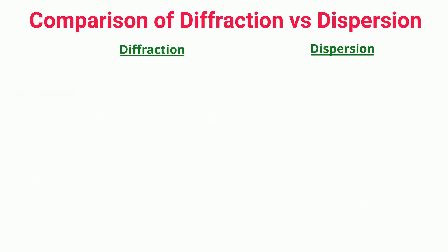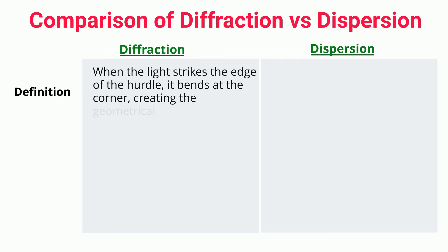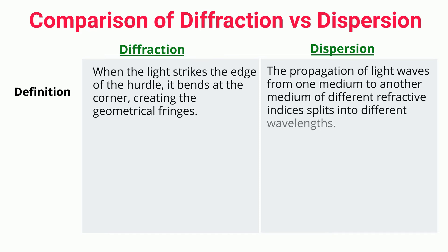Diffraction-dispersion definition: When the light strikes the edge of a hurdle, it bends at the corner, creating geometrical fringes. The propagation of light waves from one medium to another medium of different refractive indices splits into different wavelengths.